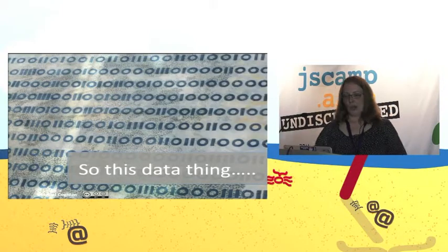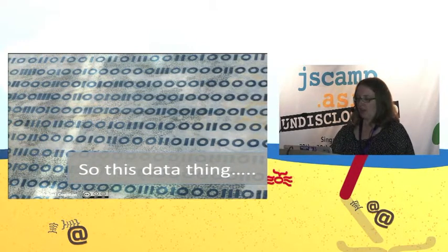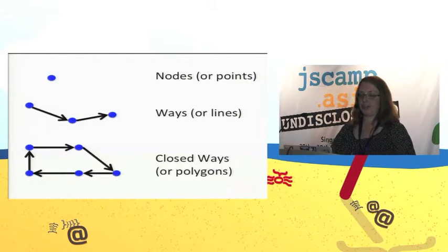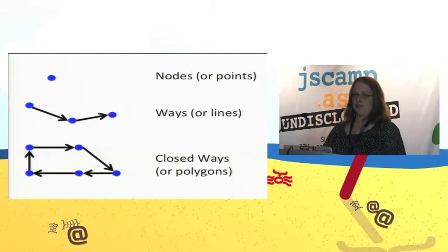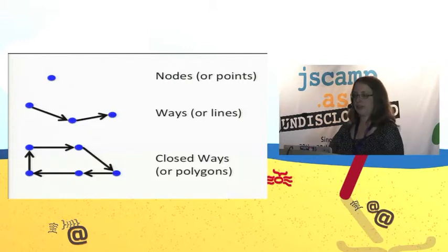So how does this free map of the entire world work? You need to have shapes. We have the idea of nodes, ways, or closed ways. A closed way is just a line that intersects with itself. You can map pretty much anything with these three primitives — a point of interest, a store, a building, a road. And people do map all of those things in OpenStreetMap.